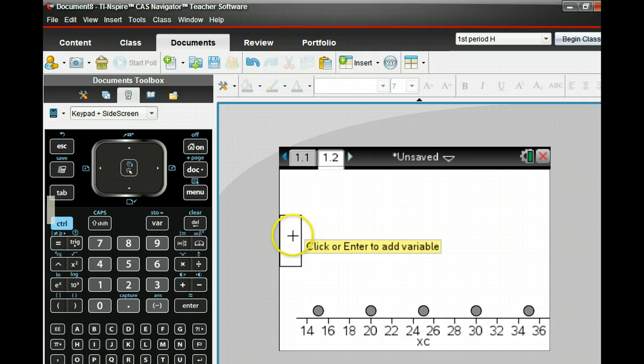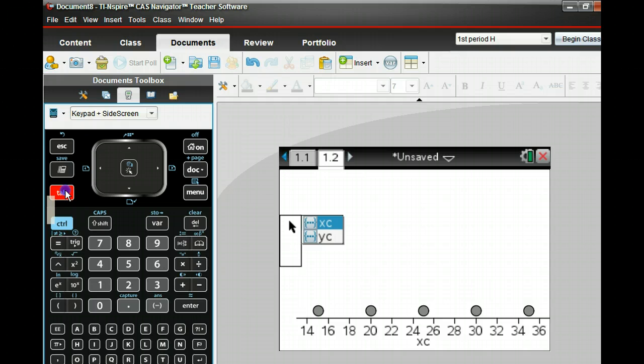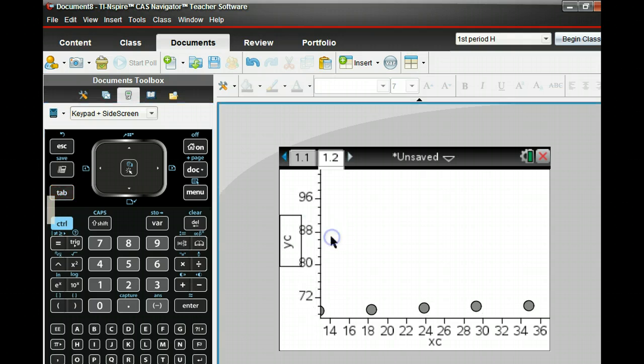And then either move your cursor over to the left and click, or as a shortcut, you could press the tab key. If you press the tab key numerous times, it will jump to that Y axis and choose your Y variable.